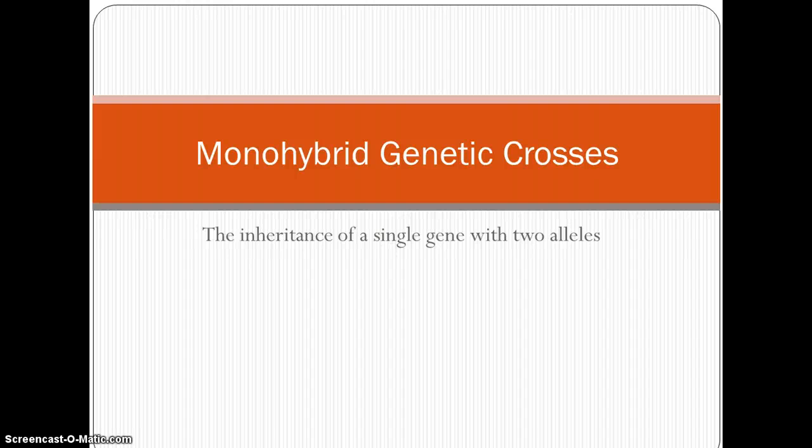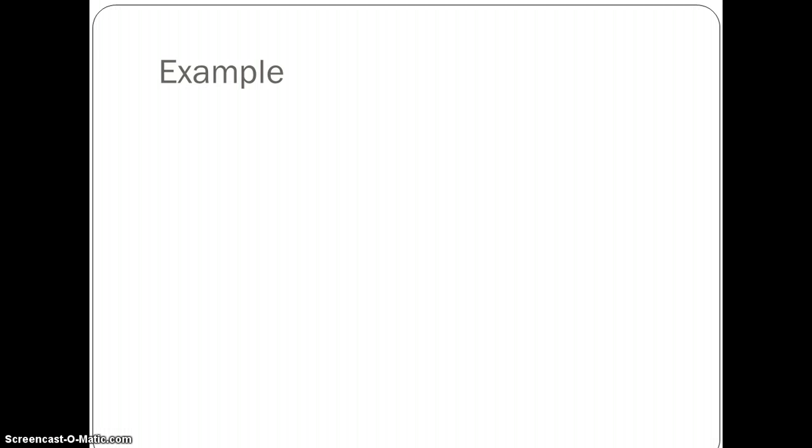This tutorial is about monohybrid genetic crosses, the inheritance of a single gene with two alleles. Here's an example. Let's consider tongue rolling in humans. It's controlled by one gene with two alleles.